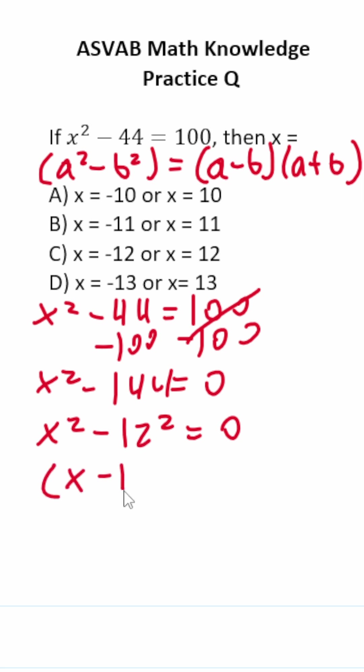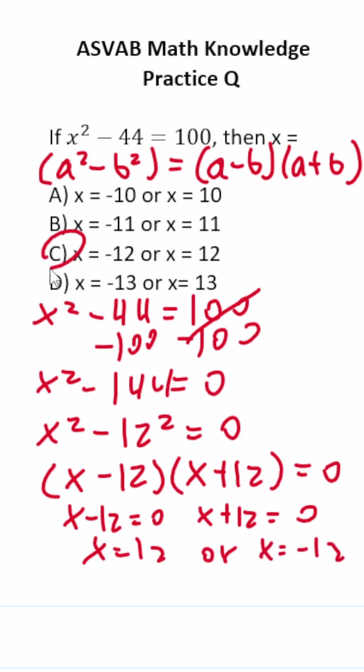x minus 12 times x plus 12 equals zero. Let's set these each equal to zero. x minus 12 equals zero, x plus 12 equals zero. This is x equals 12 or x equals negative 12, which is answer choice C.